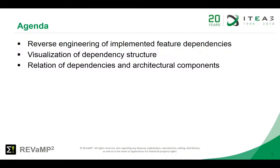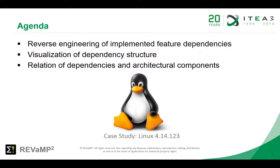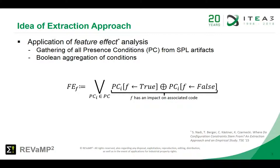For the demonstration we use Linux 4.14. The dependency extraction is based on the feature effect analysis approach as published by Sarenadi et al. First we gather all presence conditions from all code artifacts. This includes code files but also make scripts.